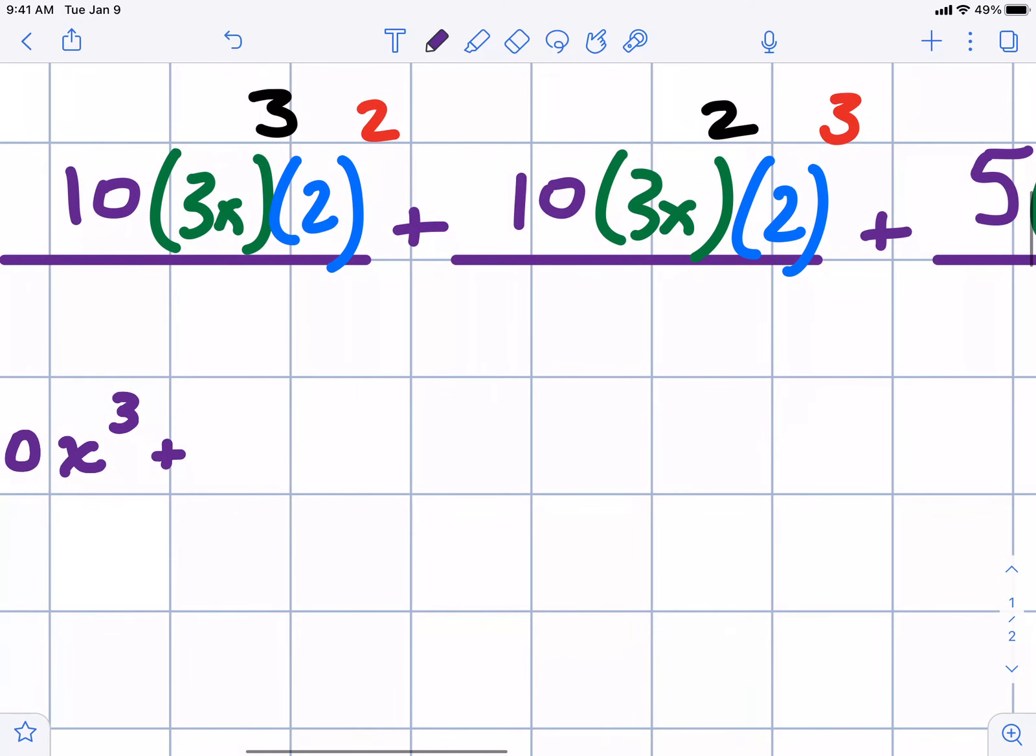We're working our way through here. In this next one, we have 2 to the third is 8, 3 squared is 9. That's going to be 72 times 10. 720x squared.